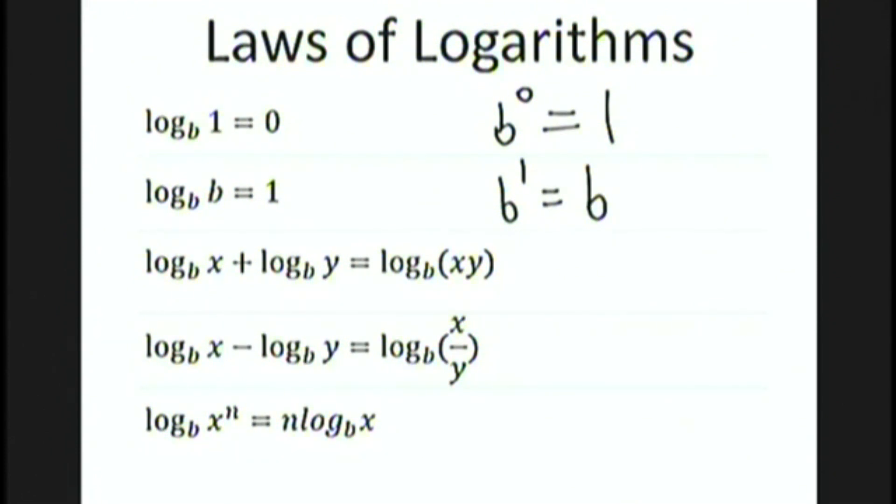And now we have some really useful logarithmic rules that correspond to various exponential rules. When you add two separate logarithms with the same base, you can rewrite that as a single logarithm and a product inside. The difference of two logarithms becomes a quotient. And when you have log base b of x to the n, you can bring the exponent out in front to get n log base b of x.